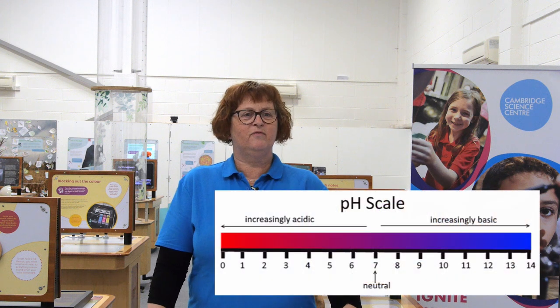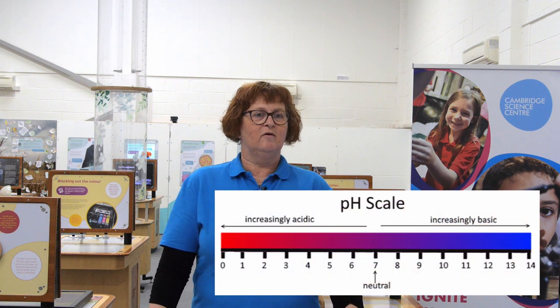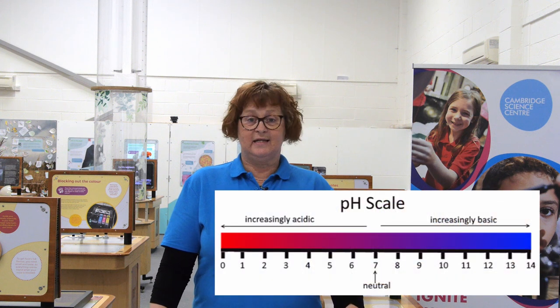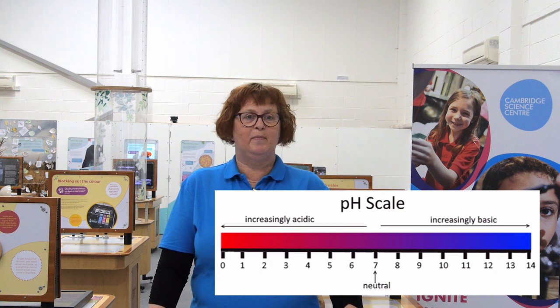This week we asked you to investigate the pH of some household substances. As a reminder, pH is a measure of how acidic or basic something is. It's a number from 0 to 14: from 0 to 6 are acids, 7 is neutral, and 8 to 14 are bases.